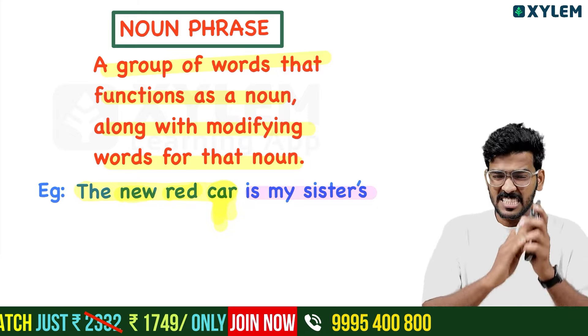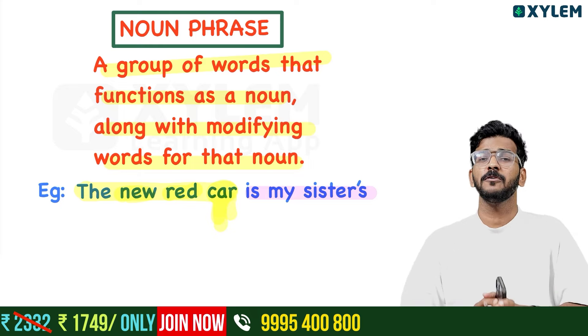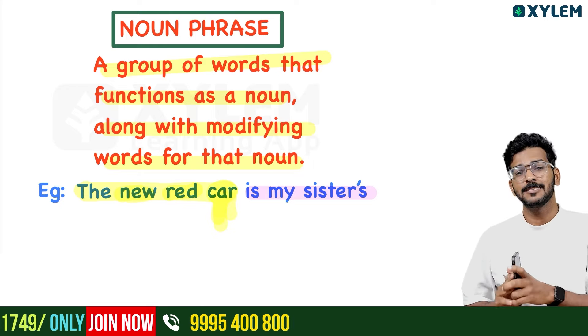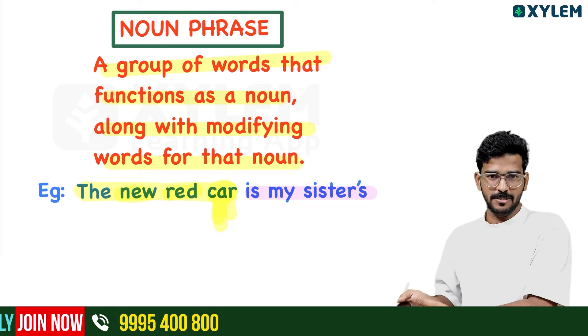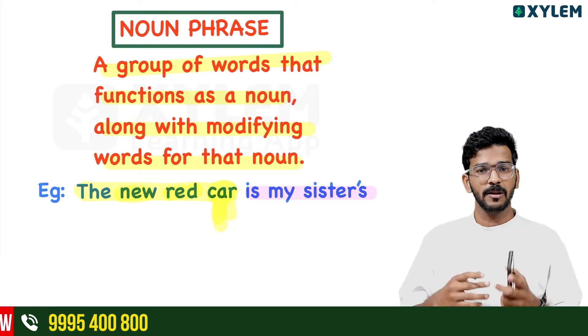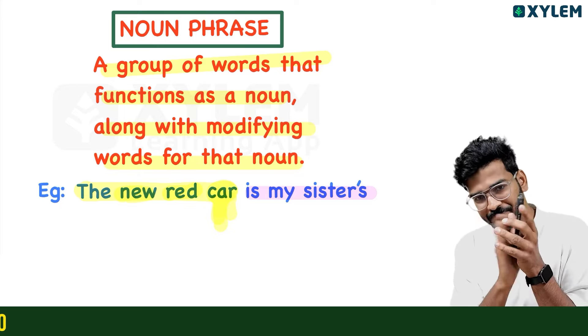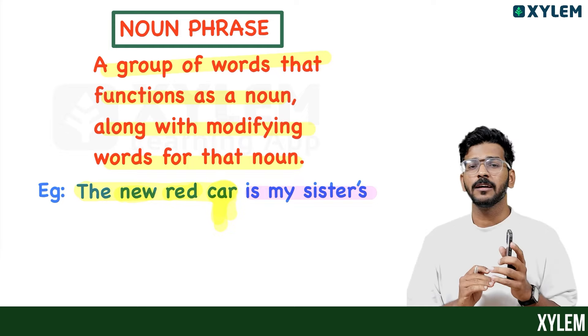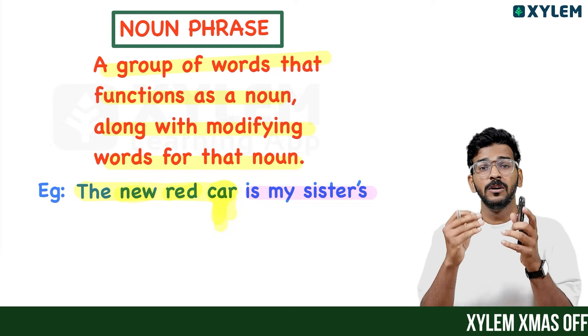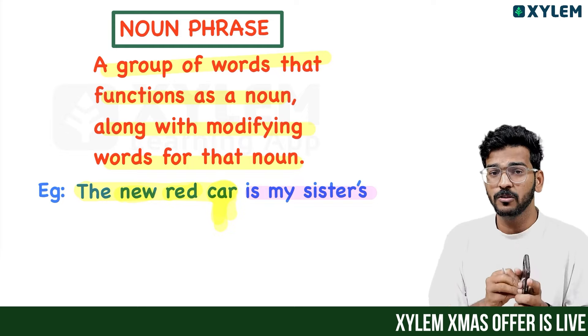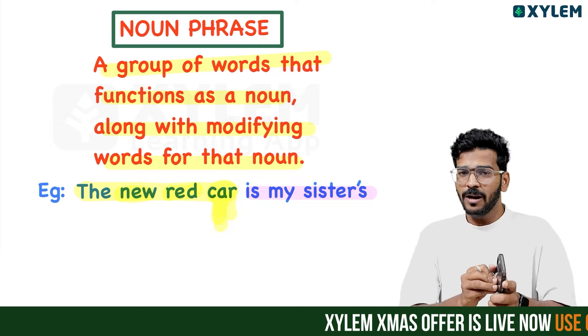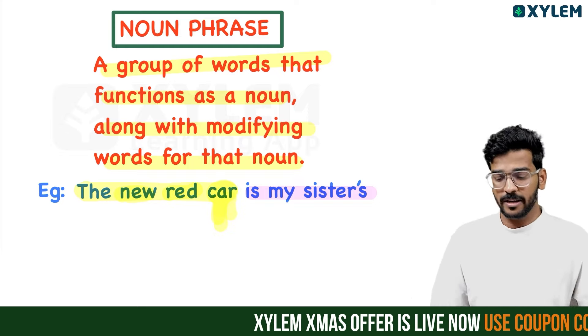For example: 'This new beautiful mobile is my brother's.' Here, the main word is 'mobile.' The mobile is also described as beautiful and new. There is another example also coming up.